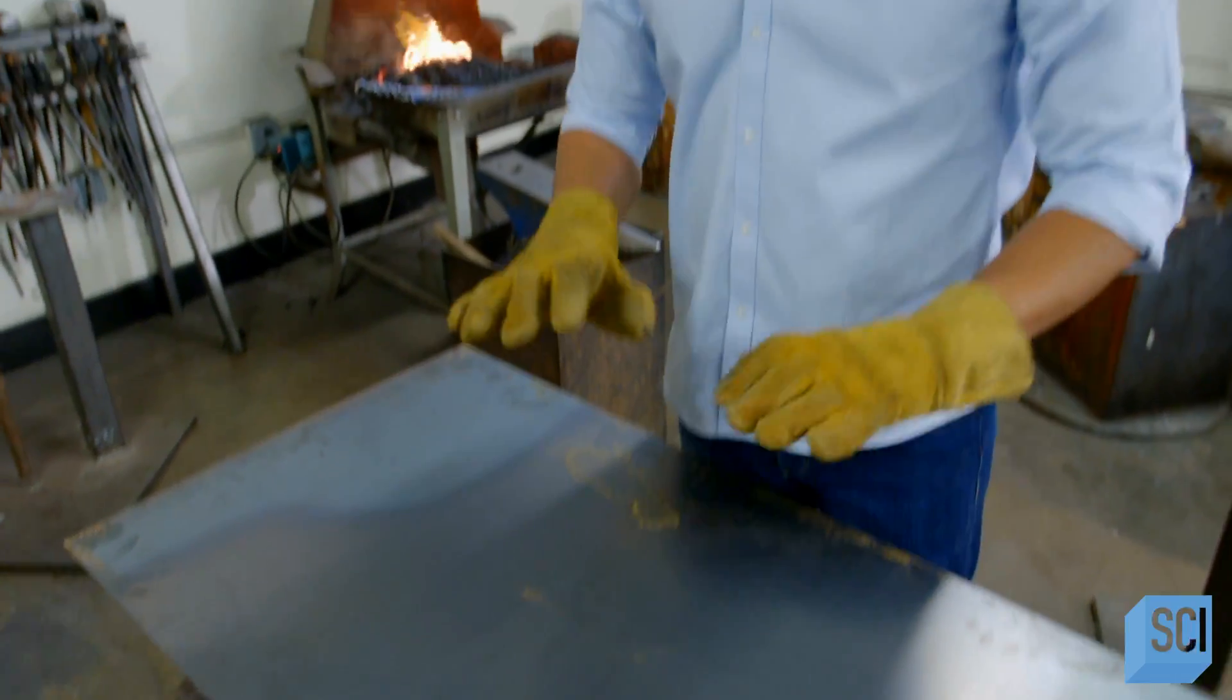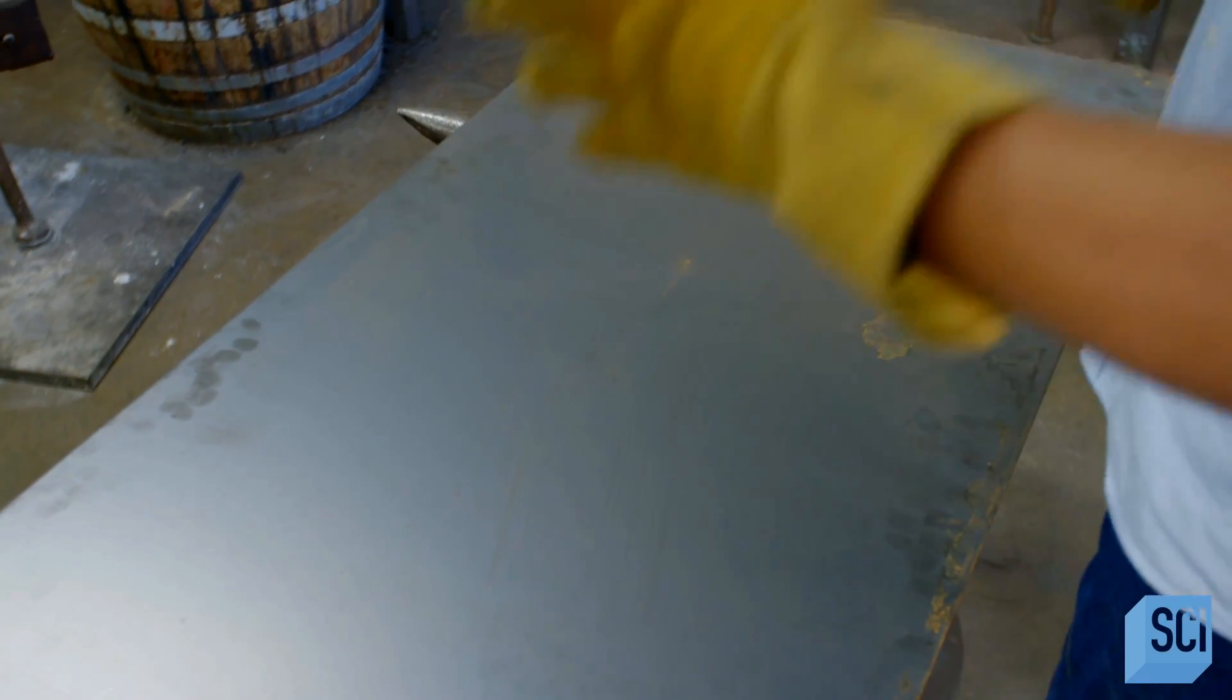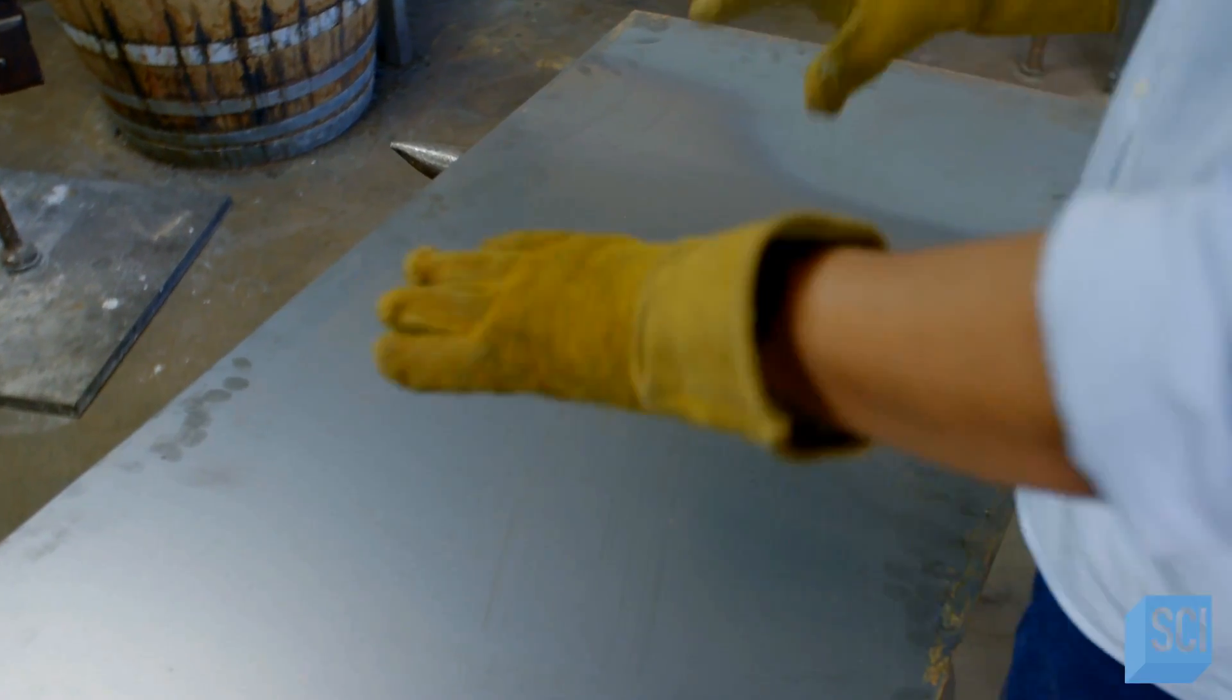Believe it or not, space is a material much like this iron sheet. And like this iron, space can distort. If I put a very heavy weight on this sheet of metal, its shape is going to change and it's going to distort.